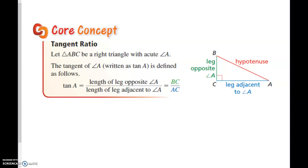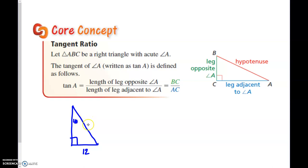Hello and welcome to today's lesson. Today we're going to be reviewing what we did last in class. We were talking about a right triangle, and in a right triangle, if we know one leg or one side, and we know an angle measure, we can also find out the other lengths and angles. We were using sine, cosine, and tangent.